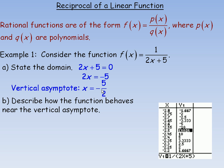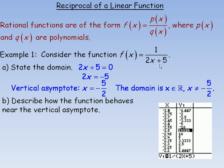That value, -5/2, is also a vertical asymptote for the function. A vertical asymptote is a line x = a value that the function cannot equal — it's a line that the graph approaches from the left and right but never touches. To write the domain, we say x is a member of the real numbers such that x cannot equal -5/2, which is the only restriction on this function.